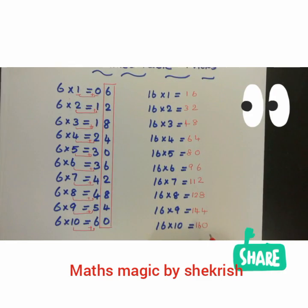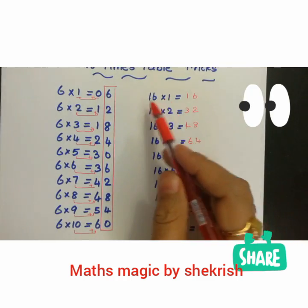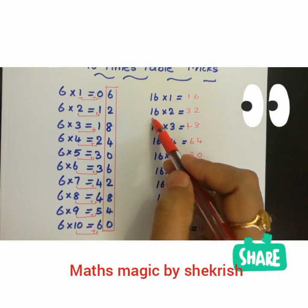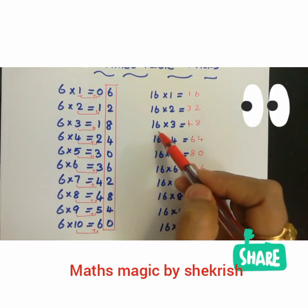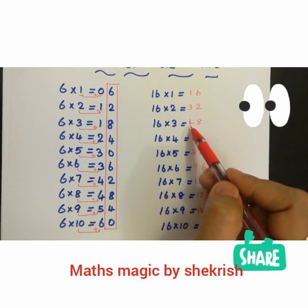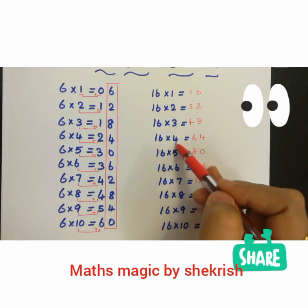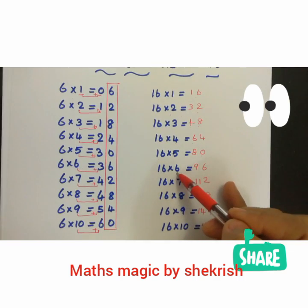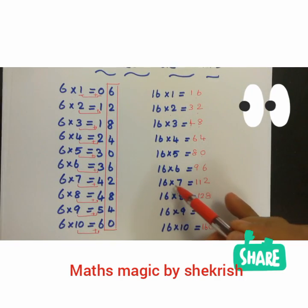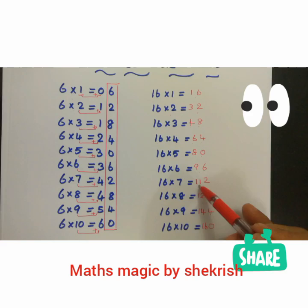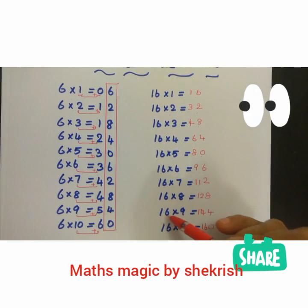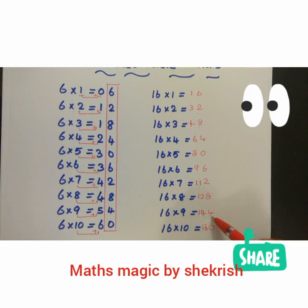Now we have the 16 times table: 16 ones are 16, 16 twos are 32, 16 threes are 48, 16 fours are 64, 16 fives are 80, 16 sixes are 96, 16 sevens are 112, 16 eights are 128, 16 nines are 144, 16 tens are 160.